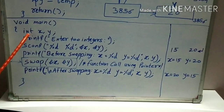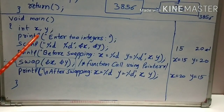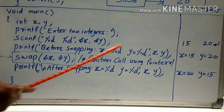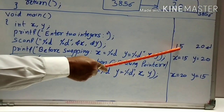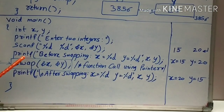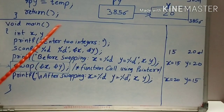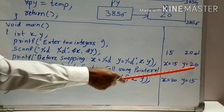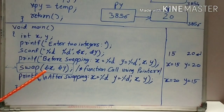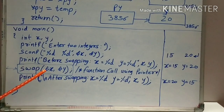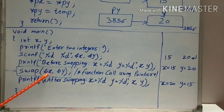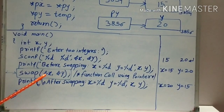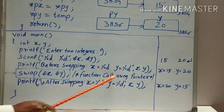Let us go to the main function. In the main function, I will require two integer variables, X and Y. Next, I have accepted the values of variable X and variable Y. Let us say I entered the value of X as 15 and value of Y as 20. Then I will print the values of X and Y before swapping — the value of X is printed as 15 and value of Y is printed as 20. Then I will call the swap function with two actual arguments. The actual arguments are address of X and address of Y, so the addresses are passed to the function.